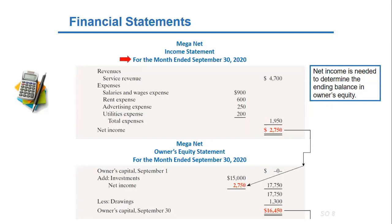As you can see here, it's for a period of time, and in this case we're having a net income because revenues are greater than expenses.